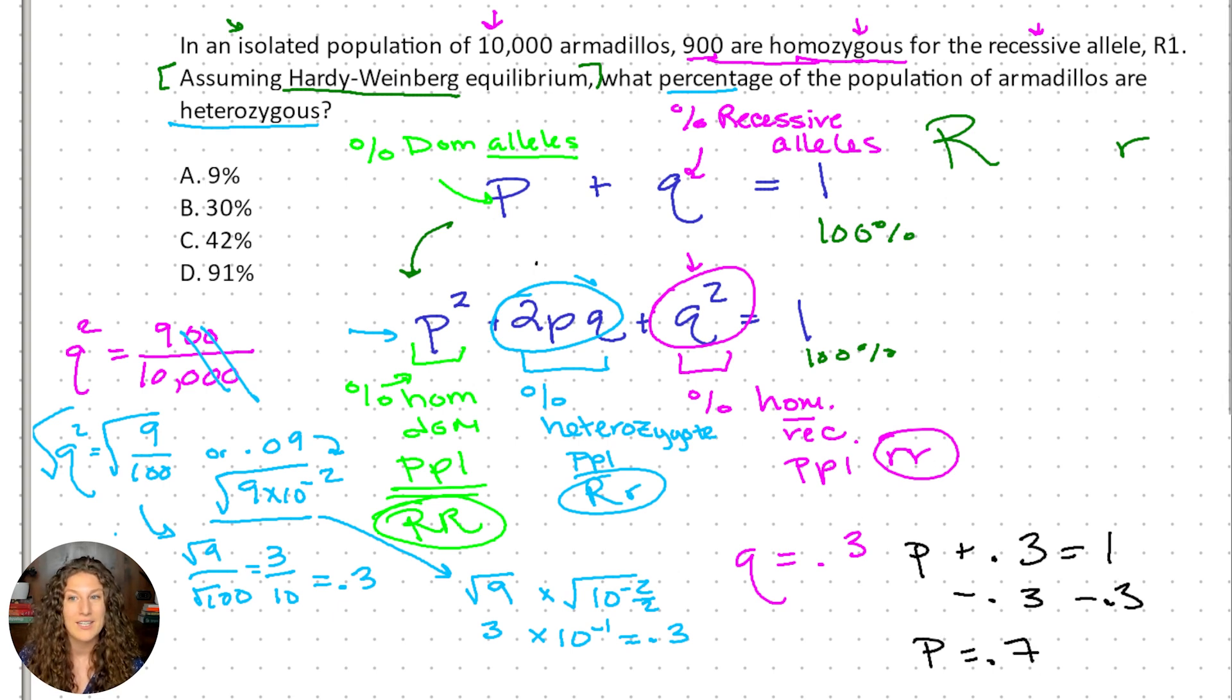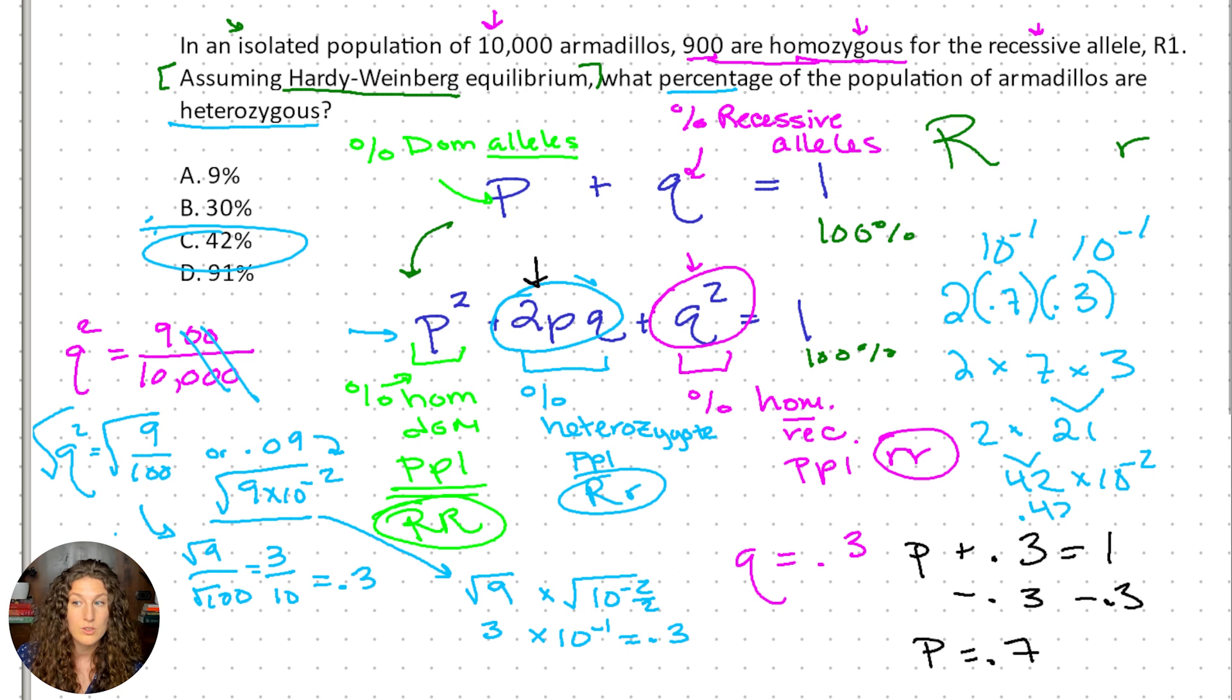Now all we need to do is plug our two values in. So we can do 2 times 0.7 times 0.3. Now these numbers may be a little difficult. So personally for me, I'm looking at my answers here and realizing that all the numbers are different. So I'm not going to worry about the decimal sign. I'm just going to do 2 times 7 times 3. 7 times 3 is 21 times 2 is 42. That's our answer, C. If you did want to keep the decimals, you could do 10 to the negative 1 times 10 to the negative 1, which gives us 42 times 10 to the negative 2, or 0.42, which is equal to 42%.